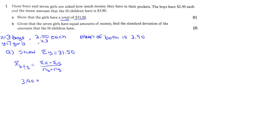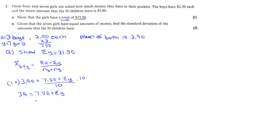All we've got to do is fill in: we know we've got seven dollars and fifty cents from the boys, we don't know what we have for the girls, we know n is ten for the whole group, and we know it equals three ninety. So all we've got to do is get that sum of Y's by itself, and we find out the girls do have thirty-one dollars and fifty cents.